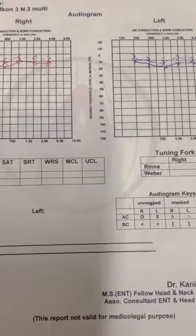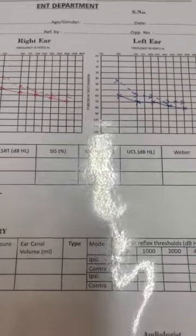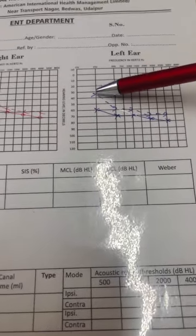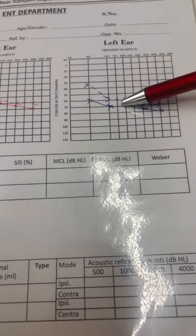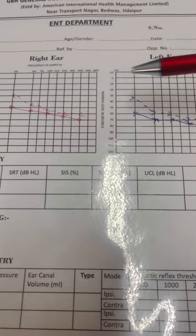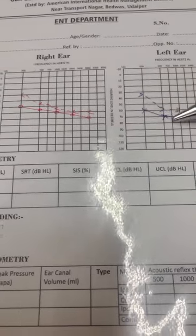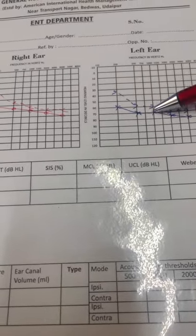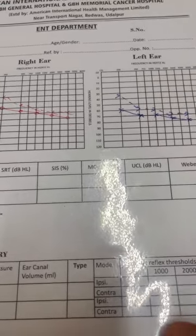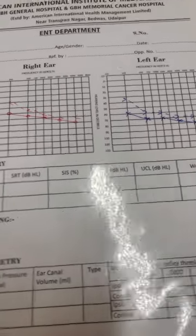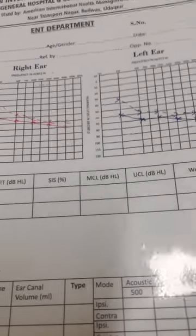Now I am going to show you some other common audiograms and discuss the pathologies. This audiogram is showing a dip in bone conduction as well as air conduction, but there is no gap between the air conduction and bone conduction. This is very classical of sensorineural hearing loss in both ears. The average is around 65 decibels, and this is very classical of presbycusis or bilateral sensorineural hearing loss.